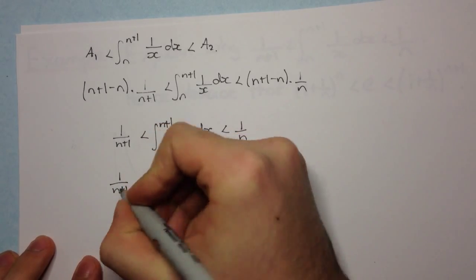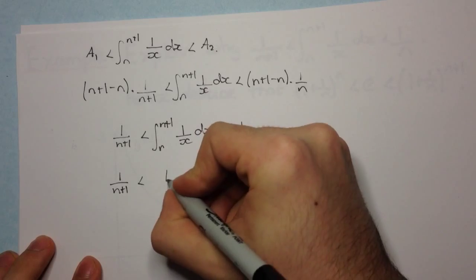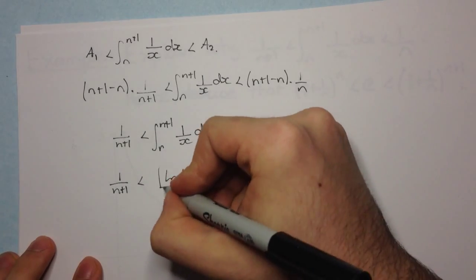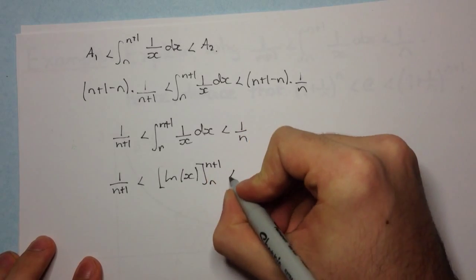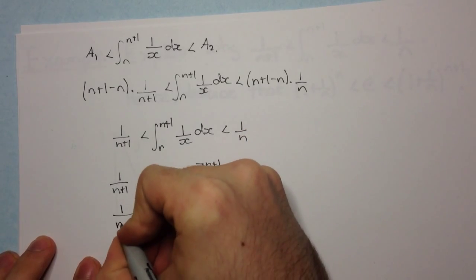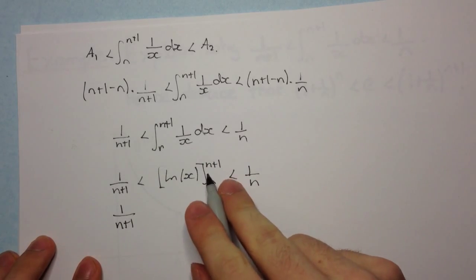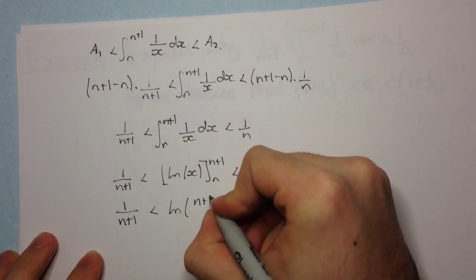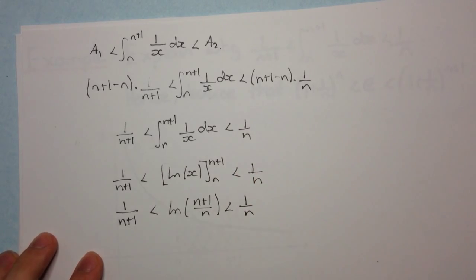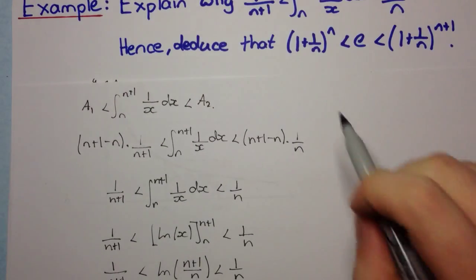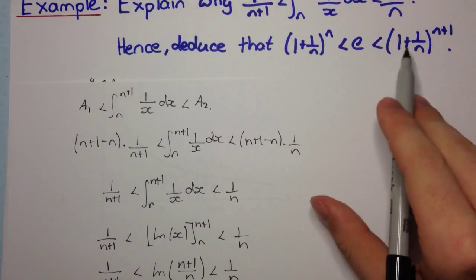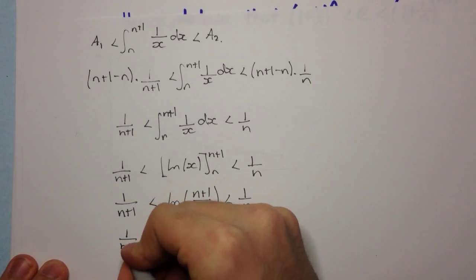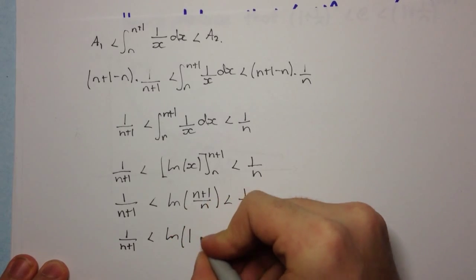If we compute the value of this integral we get log x evaluated between n and n+1. Since n and n+1 are positive we don't need absolute value signs. This becomes log(n+1) minus log(n), and using log laws we can combine them into log of (n+1)/n, which equals log(1 + 1/n). So our inequality becomes: 1/(n+1) < log(1 + 1/n) < 1/n.